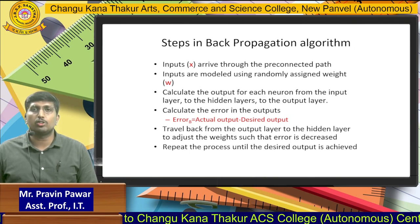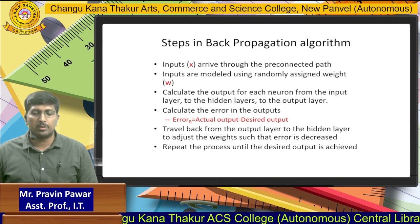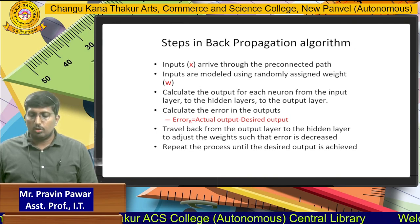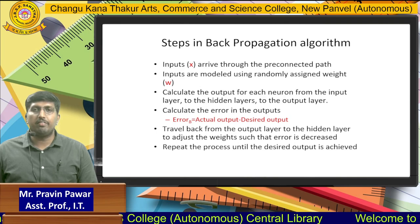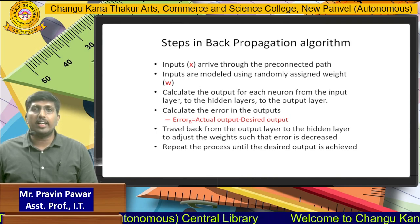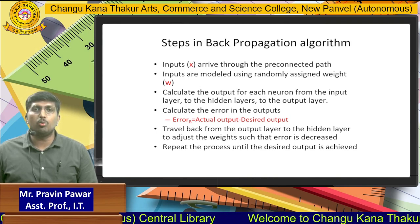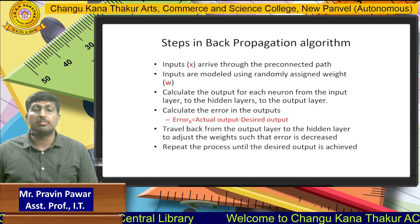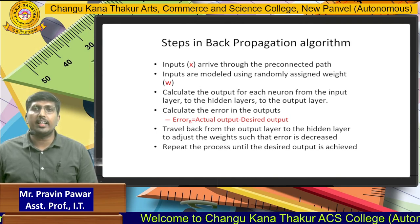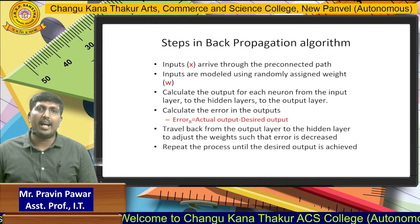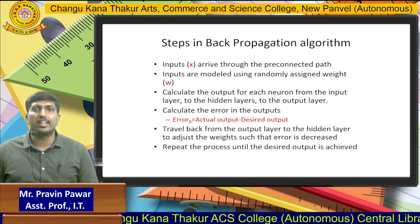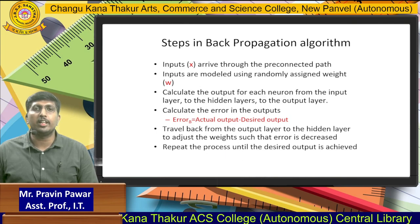That error is part of the backpropagation algorithm. We travel back from the output layer to the hidden layer to adjust the weights such that the error is decreased. To reduce that two-point error, we need to go back and make changes to the weights of that particular transmission of the input values.